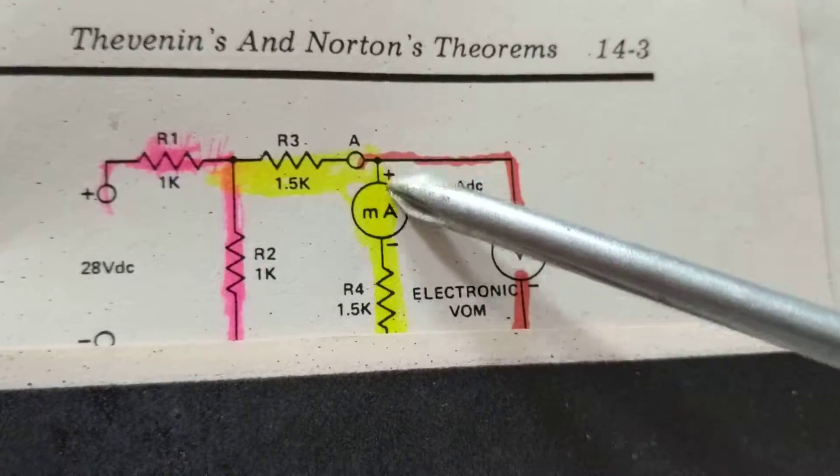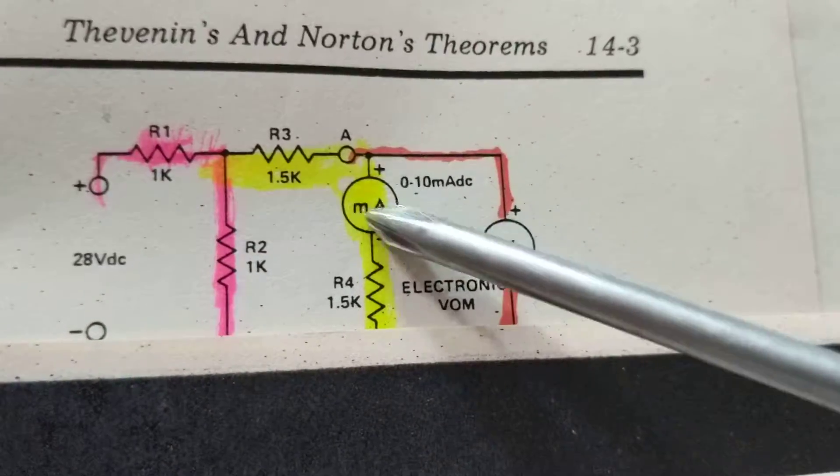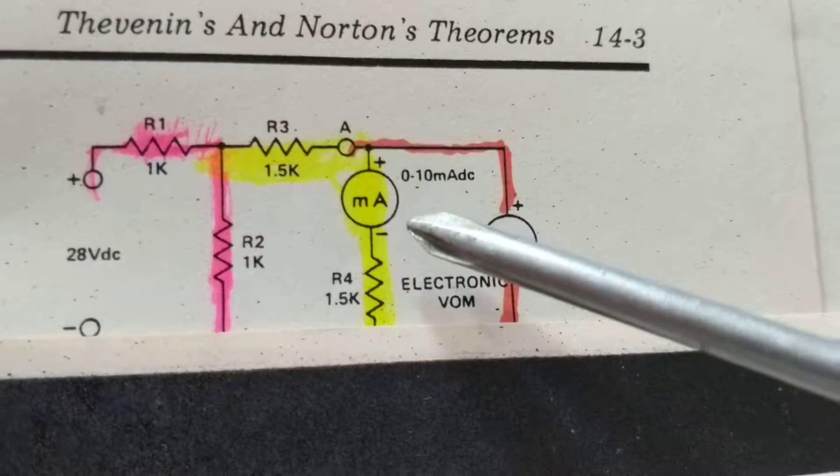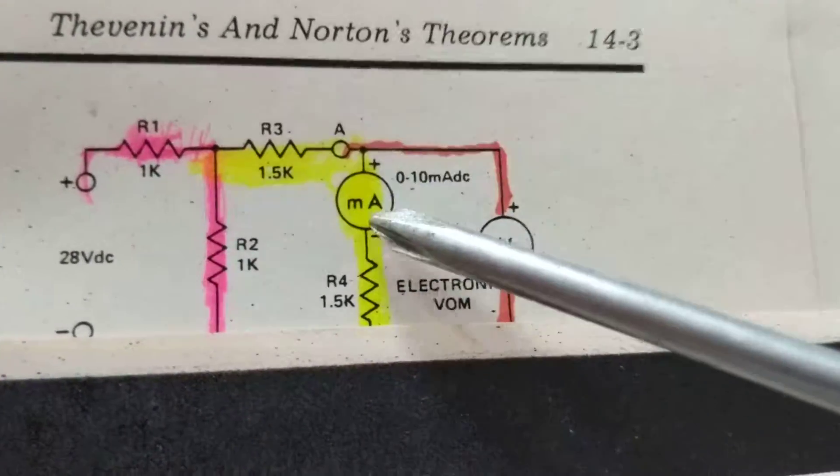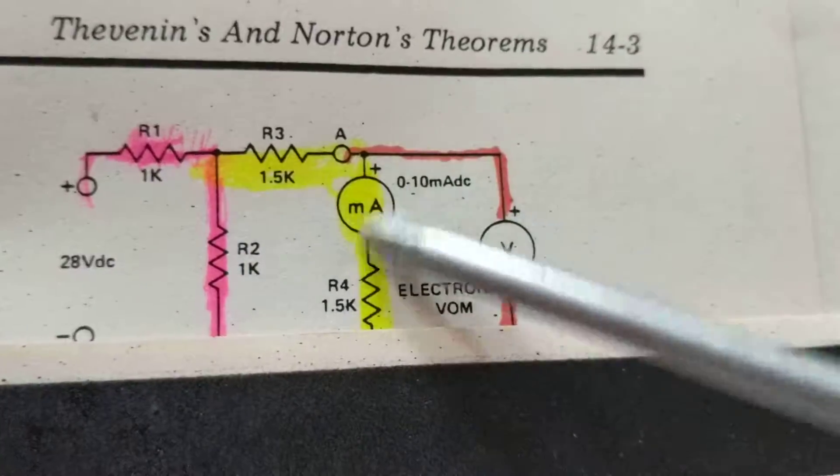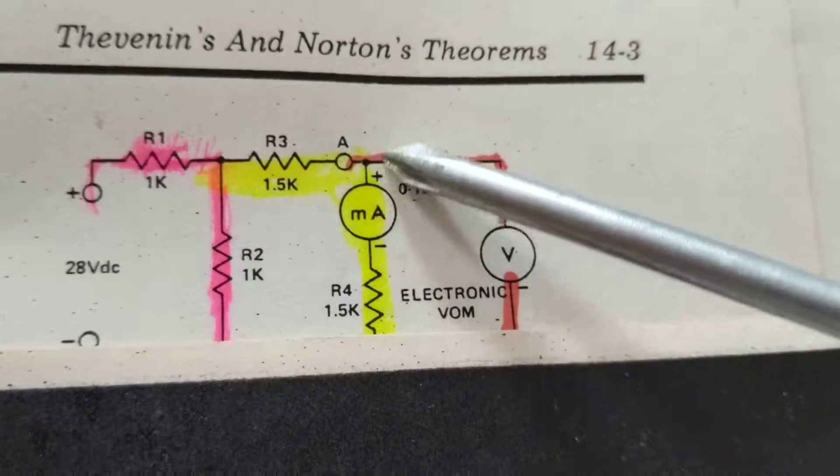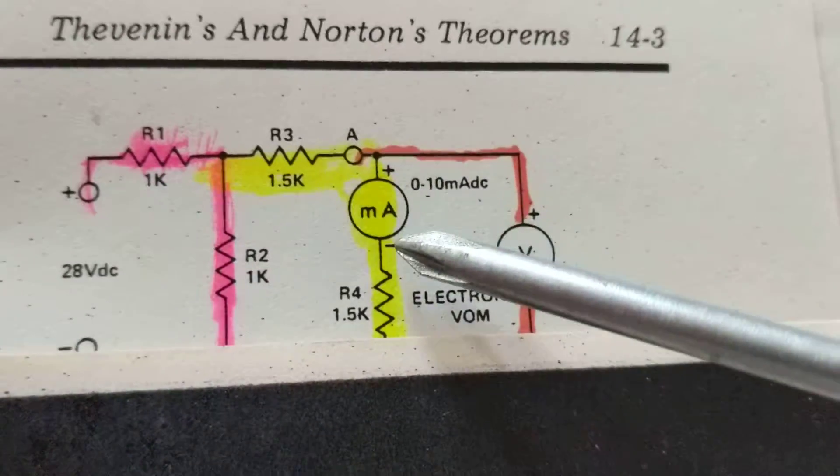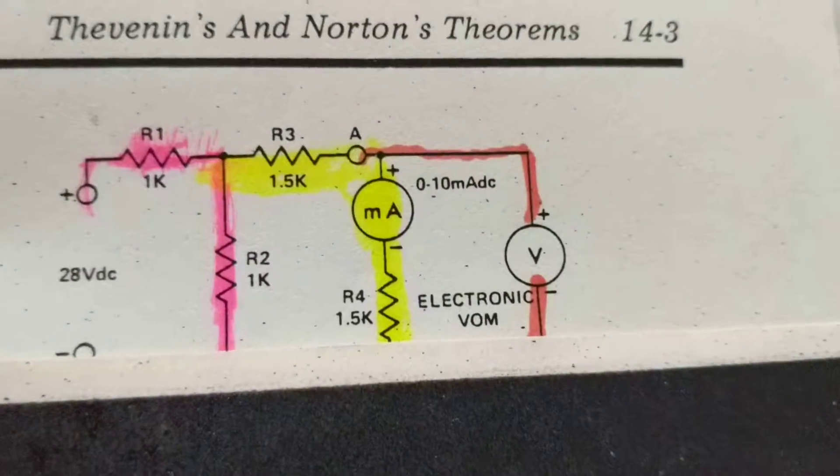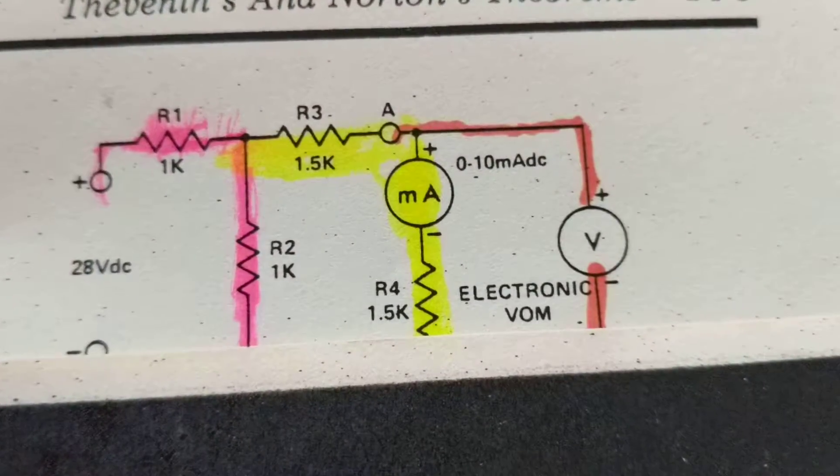Now this is called a current meter, milliammeter. It measures current. In order for it to measure current, it has to be inside the circuit, connected inside in series. It's like you break out these two points and you put this inside of it. That's what it is. So therefore, now with this, I'm going to conclude this video and continue in another one.